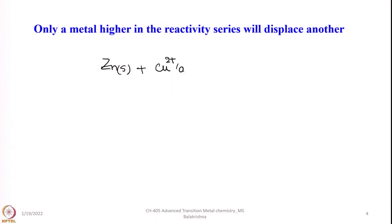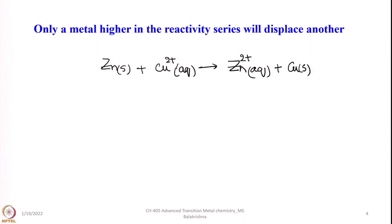If you consider this reaction, why this reaction happens can be clearly seen from the redox potential. Here, copper 2+ is reduced to copper. But silver cannot displace copper ion from solution. It is also important to distinguish between the displacement of hydrogen from an acid and hydrogen from water.